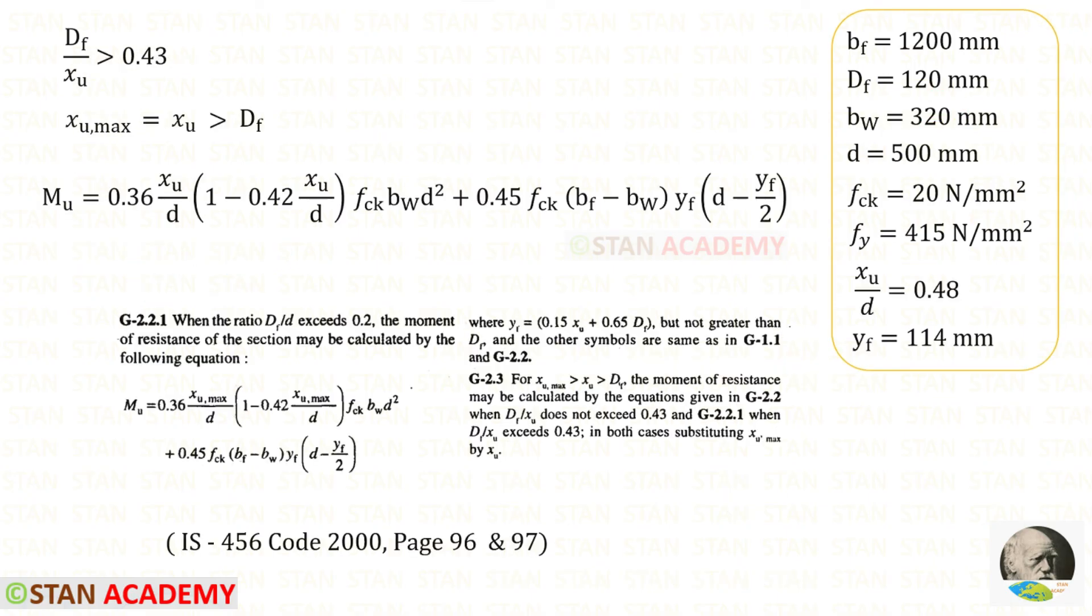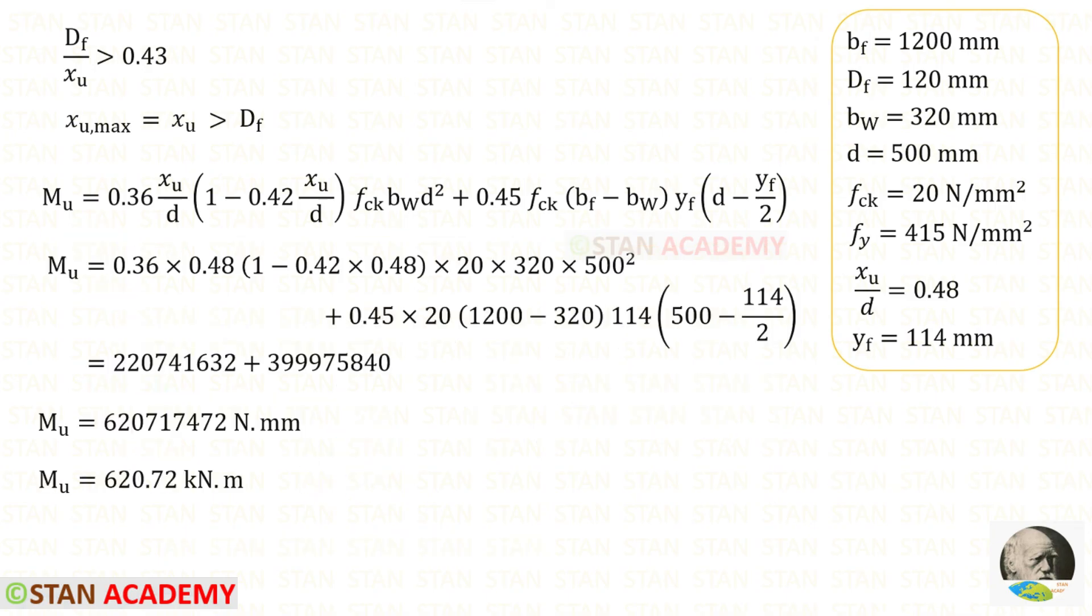Now we are going to find the moment of resistance when DF upon XU exceeds 0.43. We need to use the equation from G 2.2.1, that is this one. After applying all of the values we will get the moment of resistance.